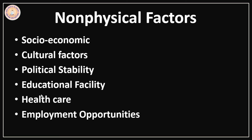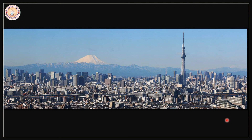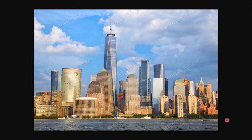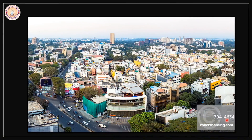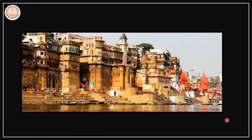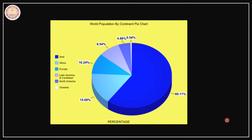Thus, cities like Tokyo, New York, Mumbai and Bengaluru are very crowded because they are centres of industry and commerce, while Varanasi is crowded because it is a centre for religion, learning and arts. As most of the world's land is in the northern hemisphere, this hemisphere has got more people than the southern hemisphere, as we can see in the map from the first slide.